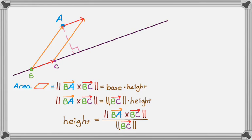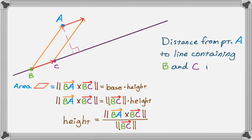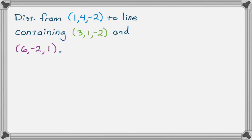So that's the vector running along the line. So we can kind of summarize that and say that the distance from a point A to a line that contains the points B and C is given by the magnitude of BA crossed with BC divided by the magnitude of BC. So let's do a problem.